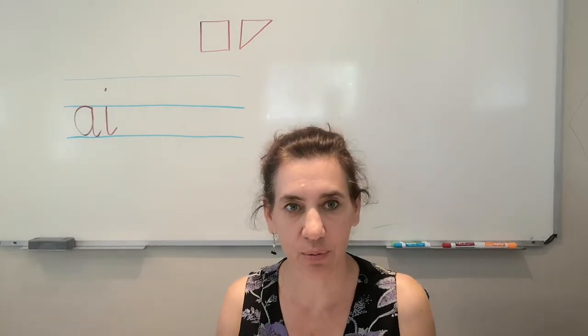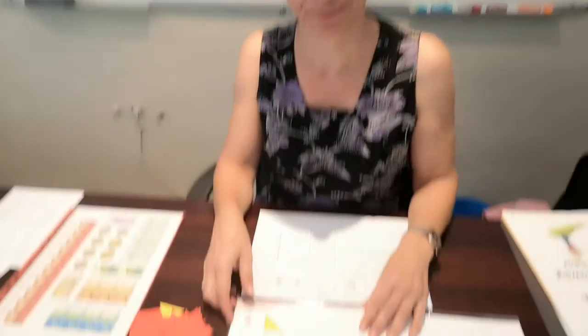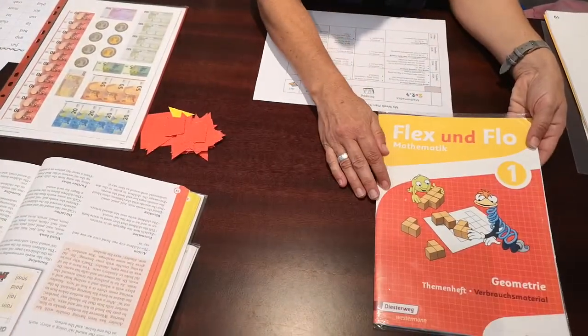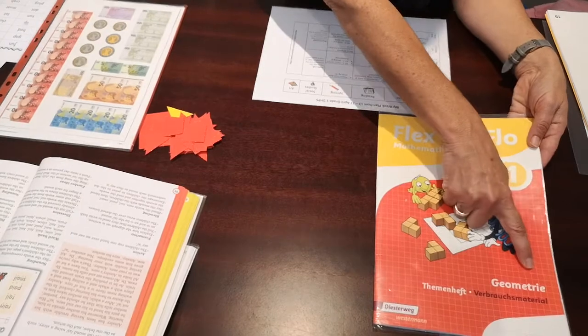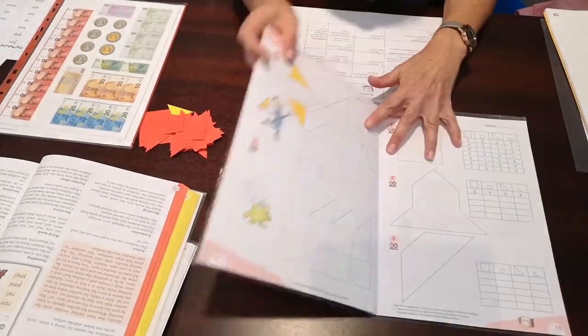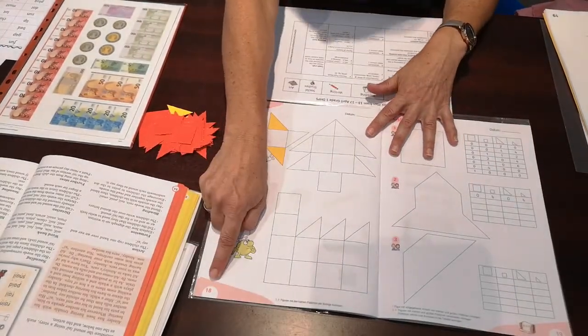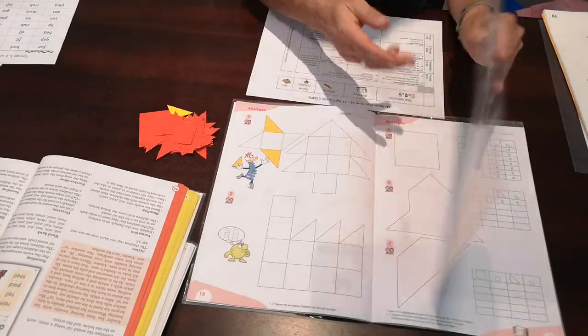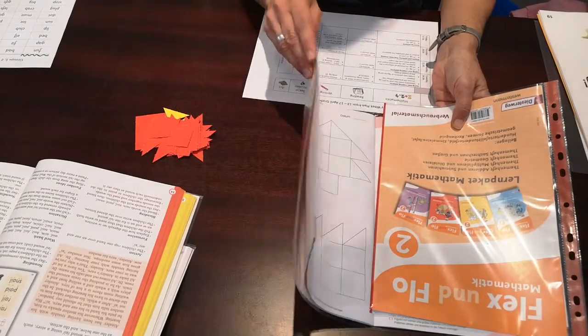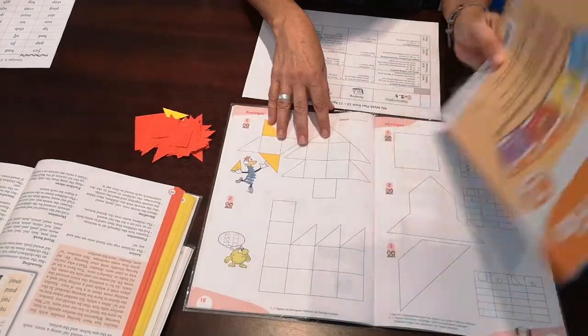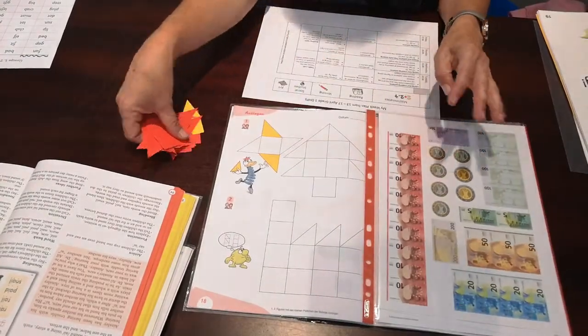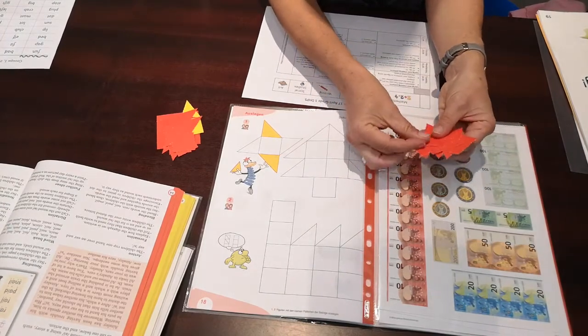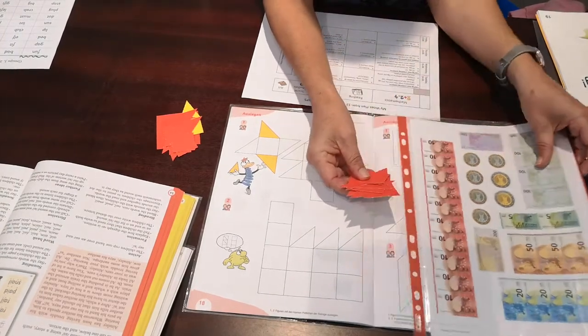We start today with mathematics. So you must take out your geometry book and open to page 18. Can you still remember the papers that you got together with this book? You have to take them out and you have some forms that you can use now for the next exercises.